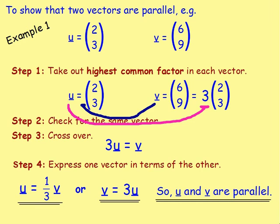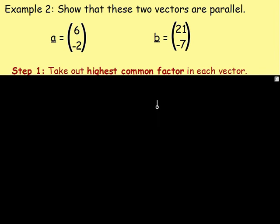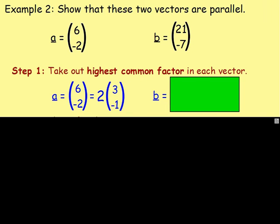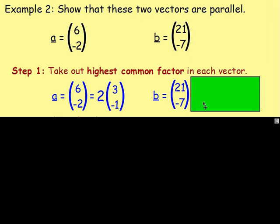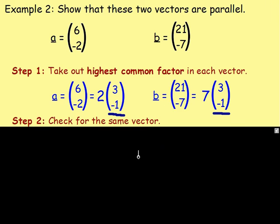Let's try another one. Example 2: show that these two vectors are parallel. We have a and b — a is (6, -2) and b is (21, -7). First, take out the highest common factor in each vector. For a, the highest common factor of 6 and -2 is 2, so that is 2 times the vector (3, -1). For b, both 21 and -7 divide by 7, so take 7 outside the bracket: 7 times the vector (3, -1). What do you notice? You've got the same vector — (3, -1) here and (3, -1) here. So we're looking for the same vector and we have that, which means that they will be parallel.